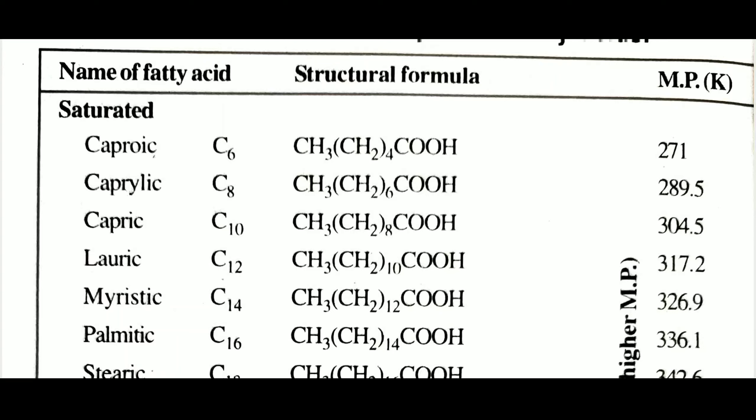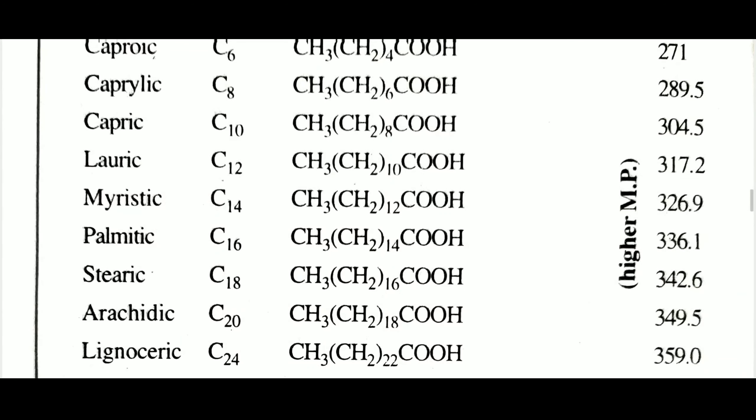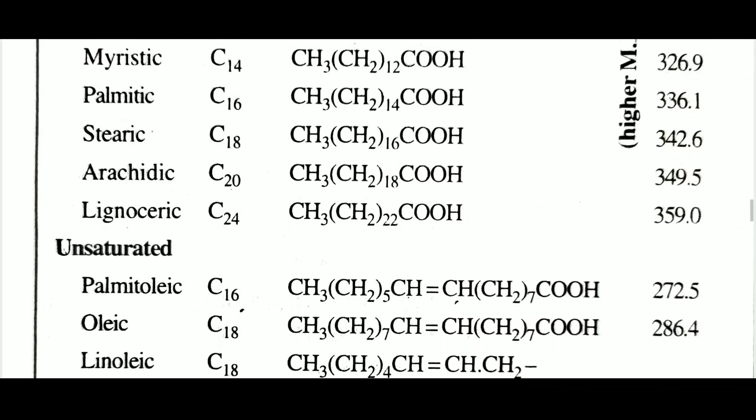Myristic acid contains 14 carbon atoms with a melting point of 326.5 K. Palmitic acid — which is a naturally occurring fatty acid — contains 16 carbon atoms with a melting point of 336.1 K. Stearic acid also occurs naturally and has a melting point of 349.5 K. Arachidic acid has a melting point of 349.5 K. Lignoceric acid contains 24 carbon atoms with a melting point of 359.5 K.